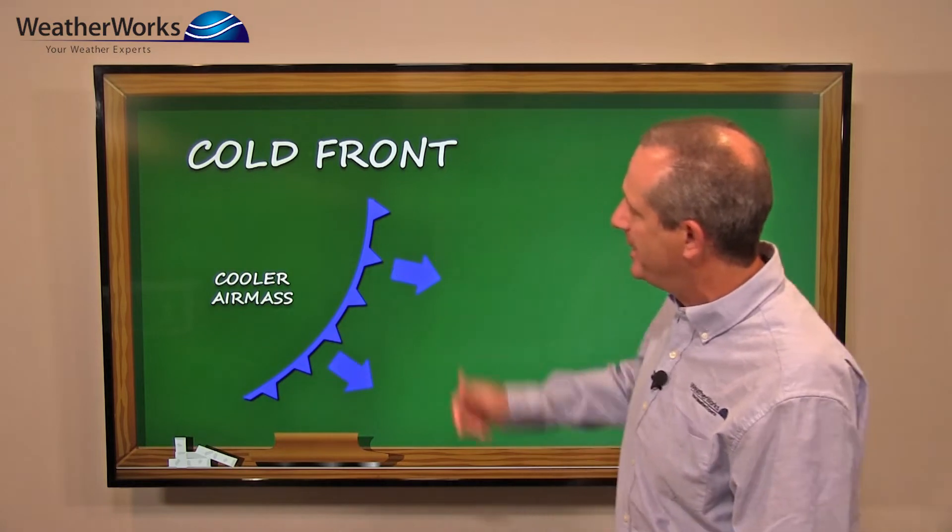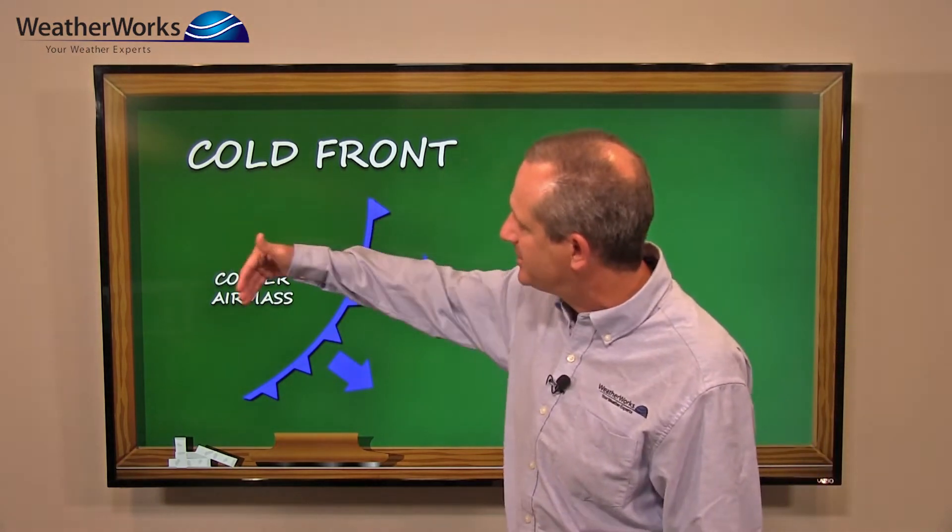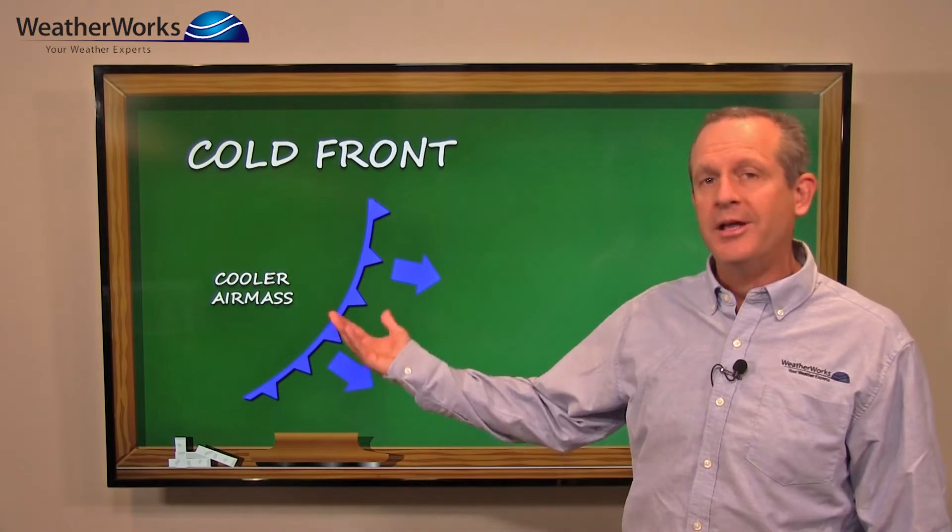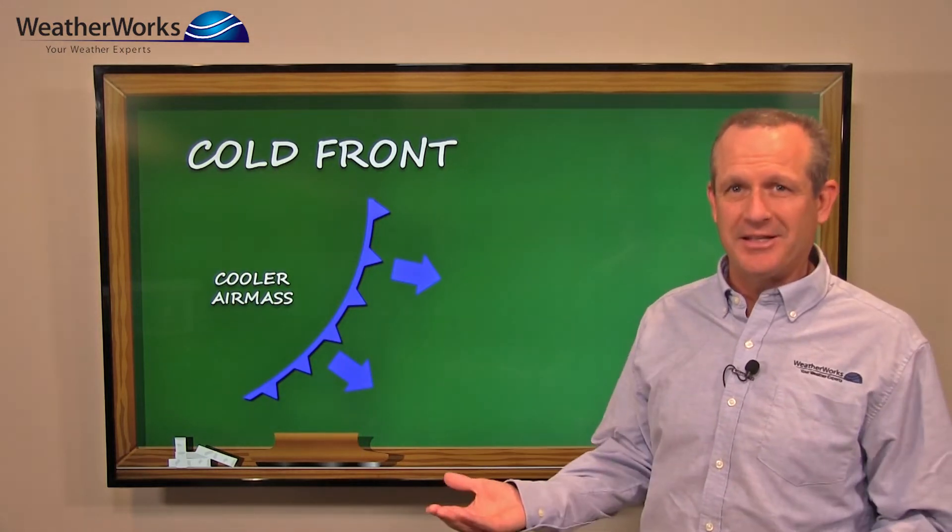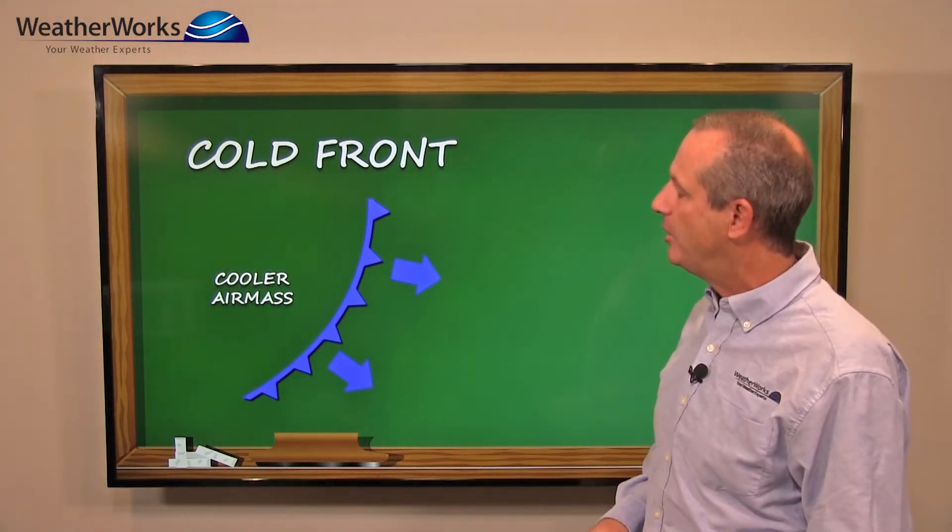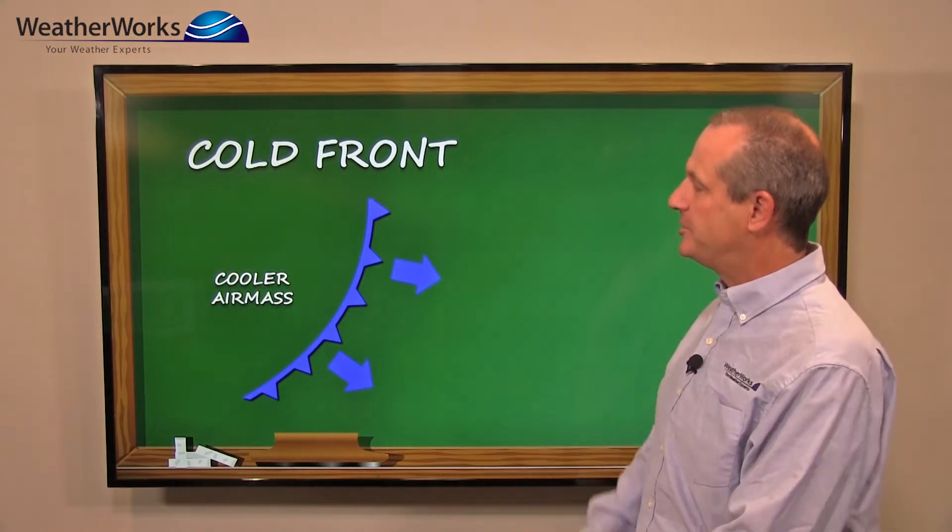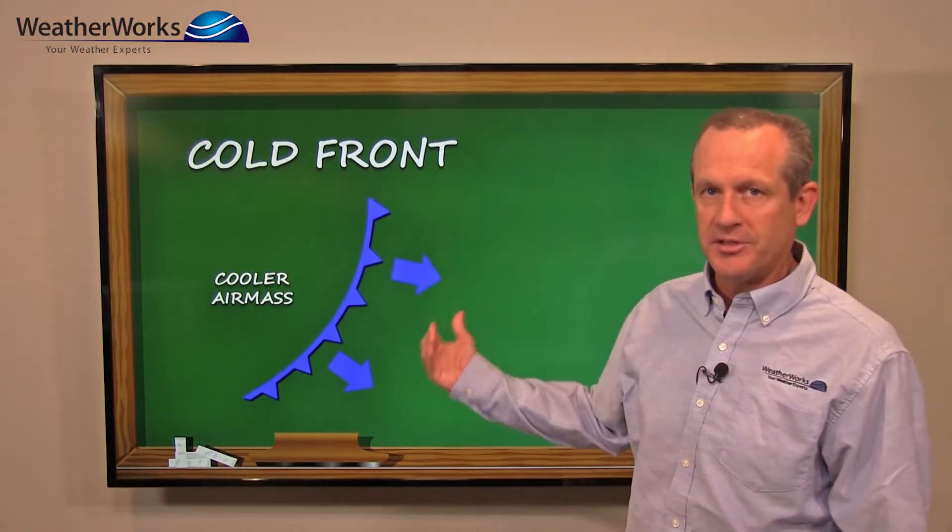Cooler air mass on one side of it, warmer air mass being replaced by the colder air. Sometimes in wintertime it's arctic air, temperatures heading down below zero, but definitely a difference between one side of the front versus the other.